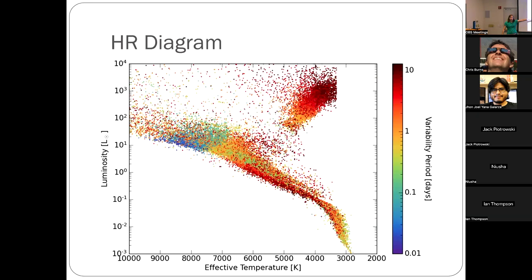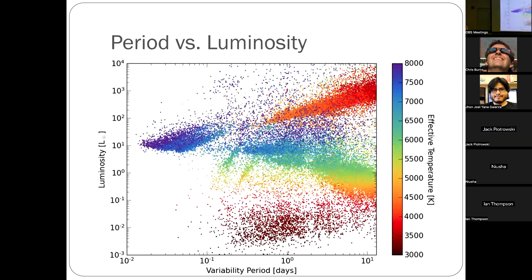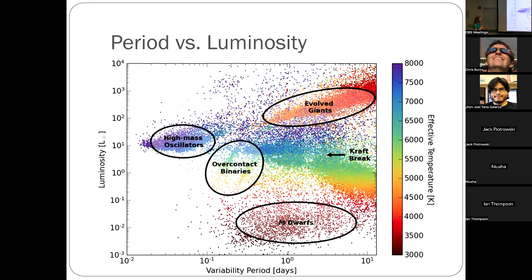Instead of the HR diagram, let me flip the axes and look at the period-luminosity diagram. Here you can see a lot more substructure — high-mass oscillators, eclipsing binaries, M stars, F stars and rotational variables, and giants. All of it is astrophysical in nature, which is very cool.